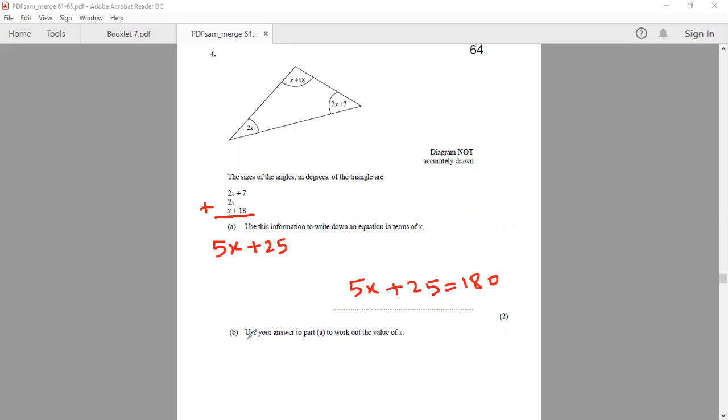And moving to the second part of the question, it says use your answer to part A to work out the value of x. Again, we can do the inverse operation. And we know the opposite of adding 25 would be taking away 25. So 180 take away 25 will give me 155.